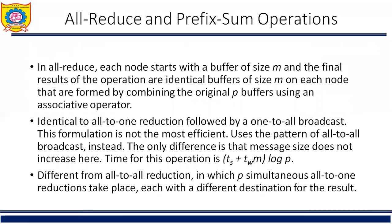The communication pattern of all-to-all broadcast can be used to perform other operations as well. One of these is a third variation of reduction in which each node starts with a buffer of size M, and the final results are identical buffers of size M on each node, formed by combining the original P buffers using an associative operator. Semantically, this operation — often referred to as the all-reduce operation — is identical to performing an all-to-one reduction followed by a one-to-all broadcast of the result. This operation is different from all-to-all reduction, in which P simultaneous all-to-one reductions take place each with a different destination.